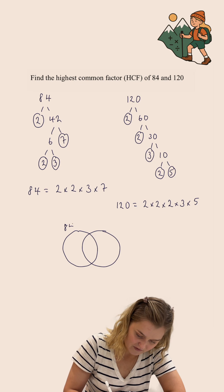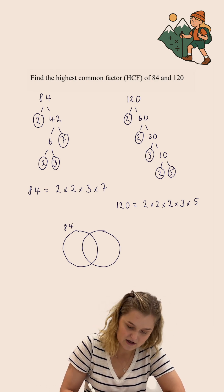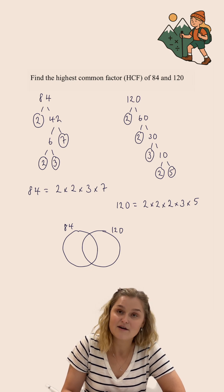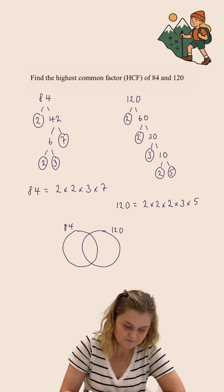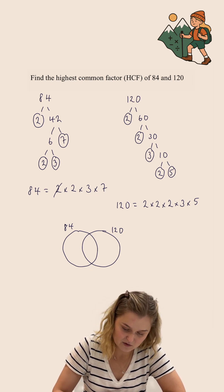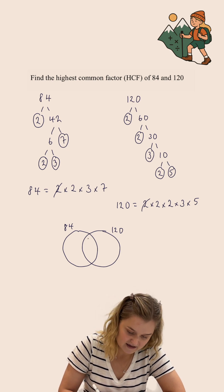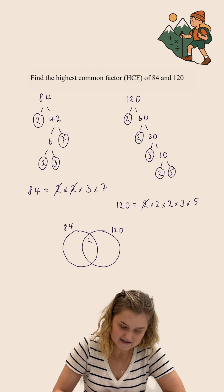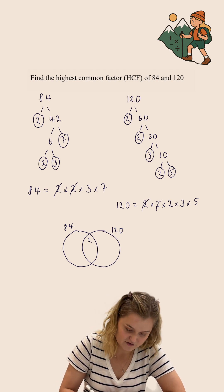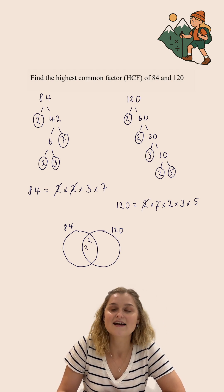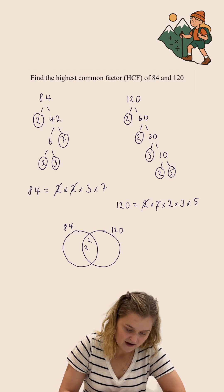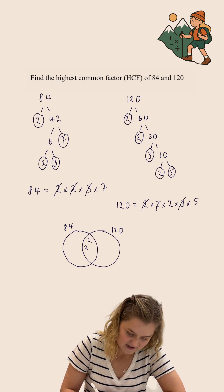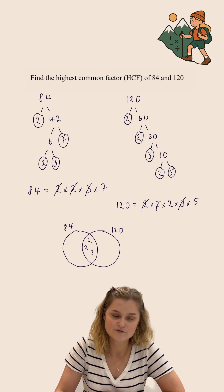I'm going to have one circle for the prime factors of 84 and one circle for the prime factors of 120. Going through the prime factors one by one: I have a 2 in 84 and a 2 in 120, so I'm going to put that in the middle because it's in both. I have another 2 in 84 and another 2 in 120, so that's going to go in the middle. I have a 3 in 84 and a 3 in 120, so that one is also going in the middle.